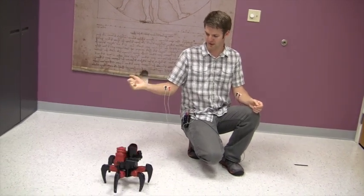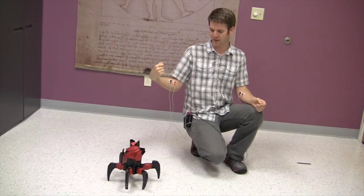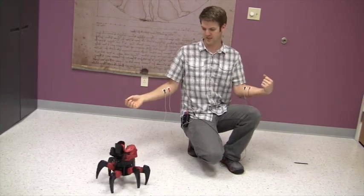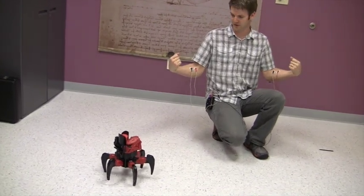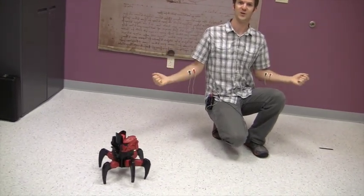If I flex one muscle, I can control the direction the robot's facing. Flex the other, and make it move in that direction. If I flex both muscles, it shoots.